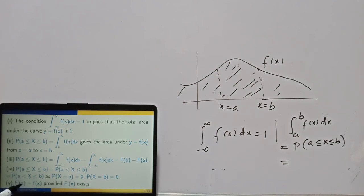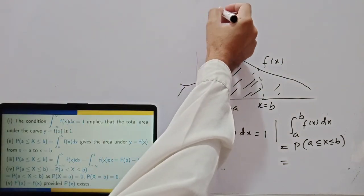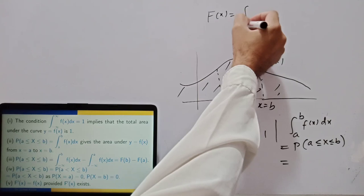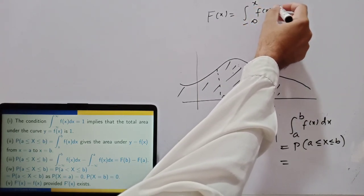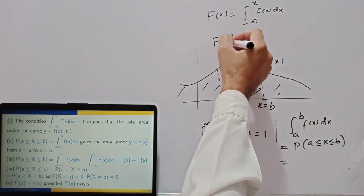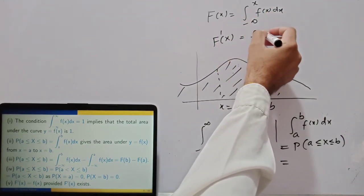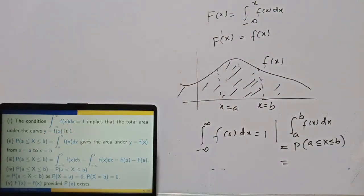From the definition and the property of integrals, the derivative of the CDF F'(x) equals the PDF f(x). Since F(x) equals the integral from minus infinity to x of f(t) dt, differentiating with respect to x gives f(x) by the first fundamental theorem of calculus, provided F'(x) exists.